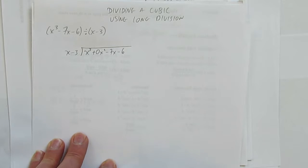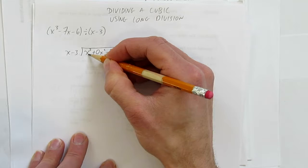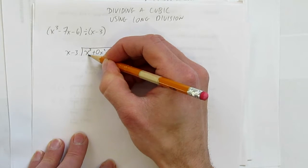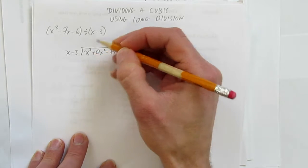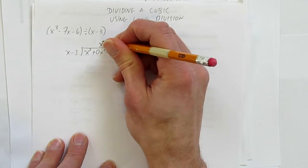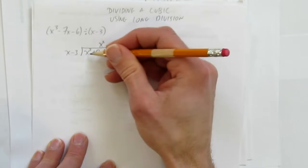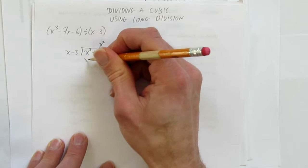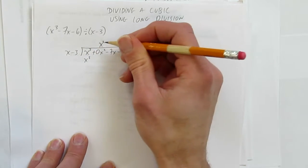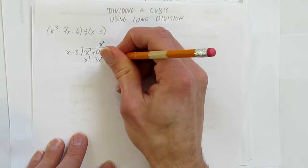Now, we want to make this x into x³. What times x makes x³? The answer is x². Put it in the x² column. We multiply: x² times x gives x³, and x² times -3 gives -3x².